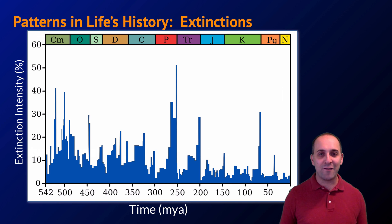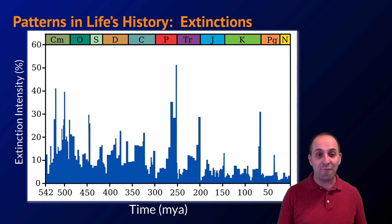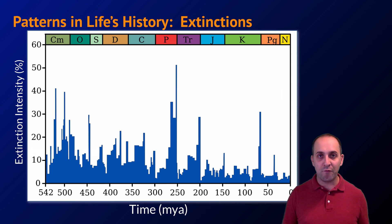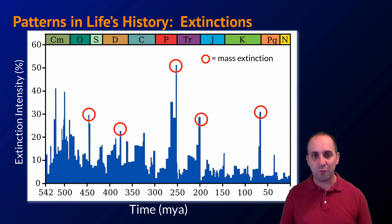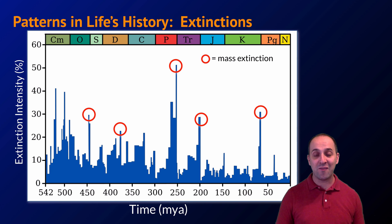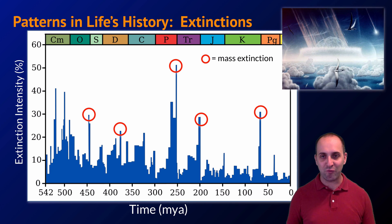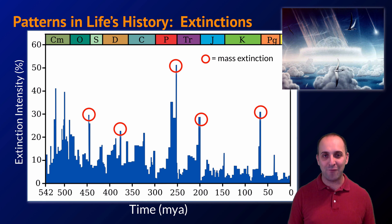Looking at patterns in the last 500 million years — the time of macroscopic multicellular life — this graph shows extinction intensity in marine organisms over time. Periodically we see spikes in extinction rate, referred to as mass extinctions. There's much debate about their causes, but whatever caused them had to be pretty cataclysmic, like asteroids hitting the Earth. That last spike on the right is the one that got rid of the dinosaurs.